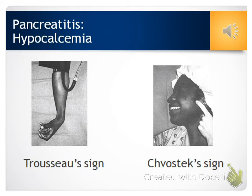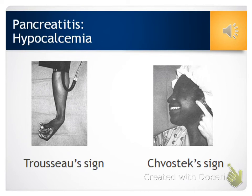Some complications to be aware of: monitor potassium and magnesium closely, but very specific to pancreatitis is hypocalcemia. A patient with hypocalcemia may begin to exhibit tetany. The exact reason pancreatitis causes hypocalcemia isn't fully known, but it's believed to be caused by calcium combining with fatty acids during fat necrosis. You want to know how to perform a Trousseau sign and a Chvostek sign — these are quick assessments for signs of hypocalcemia, followed up with a laboratory test.